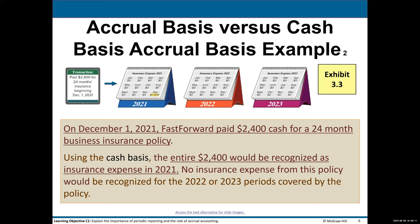Let's show the difference between the accrual basis and cash basis with a basic example. On December 1, Pass Forward pays $2,400 cash for a 24-month business insurance policy. If you pay it, it's an expense on cash basis. So what happens in the cash basis: we're going to record that whole $2,400 in December as insurance expense. But that's kind of weird because that insurance policy is a 24-month policy — it's going to help us for the next couple of years, but we're expensing it all in December 2021.